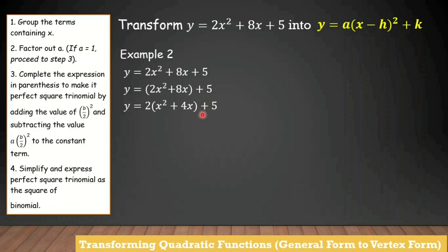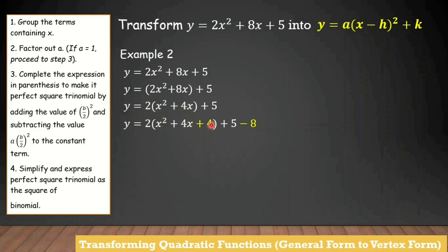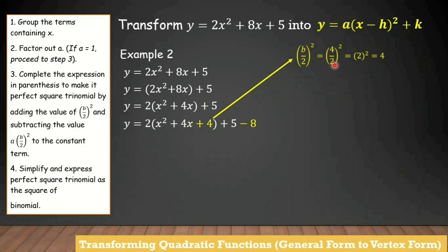After step 2, we go to step 3: complete the expression in parentheses to make it a perfect square trinomial by adding b over 2 squared. The b inside the parentheses is 4. Using the formula b over 2 squared: b is 4, divided by 2 equals 2, squared equals 4. So we add positive 4 inside the parentheses.